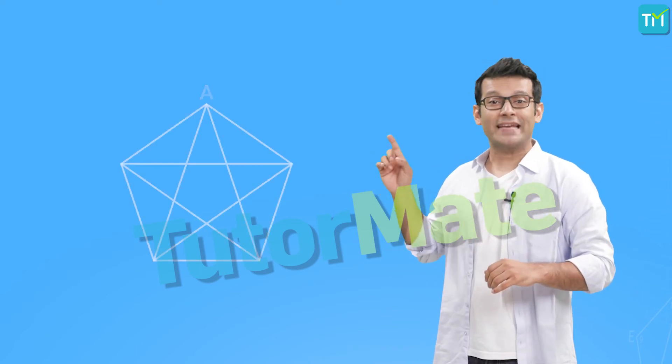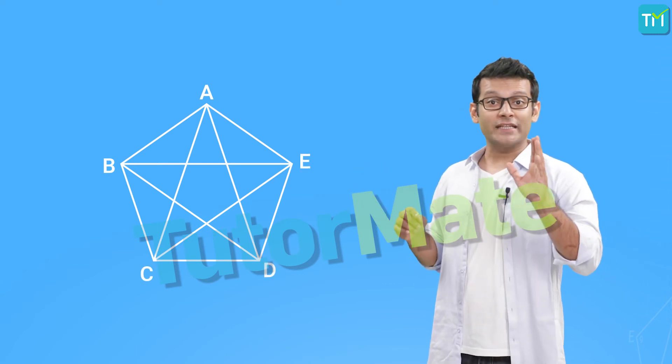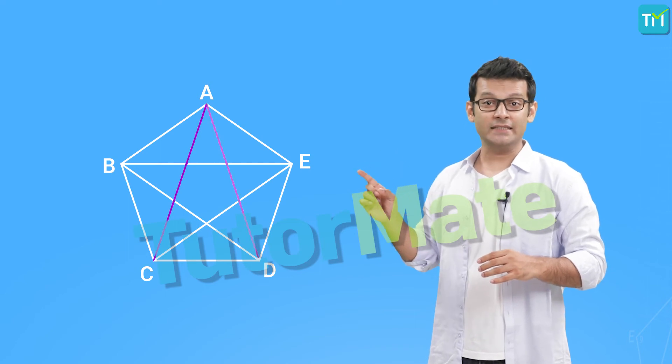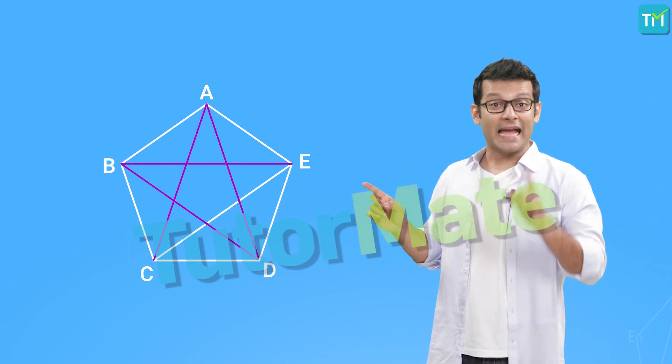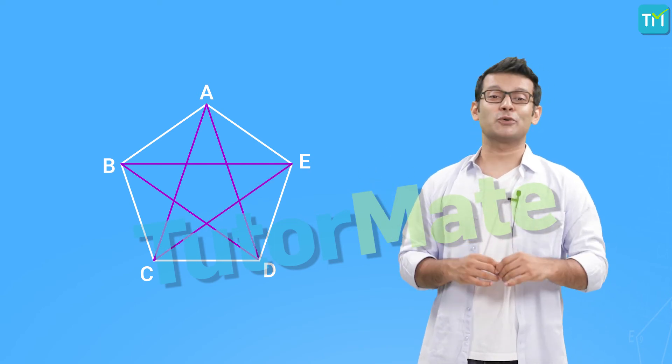Say we have the pentagon A, B, C, D, E and we can see it has its diagonals as AC, AD, BE, BD and CE and these are 5 diagonals in total.